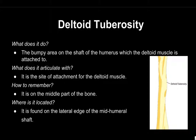The deltoid tuberosity is a bumpy area on the shaft of the humerus to which the deltoid muscle is attached. It articulates with the attachment of the deltoid muscle. You can remember it by the fact that it is on the middle part of the bone. It is located on the lateral edge of the mid-humeral shaft.